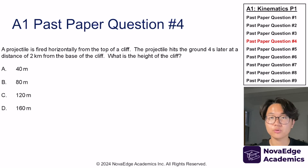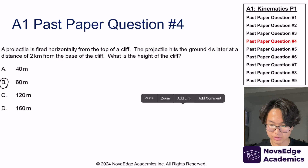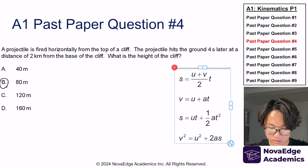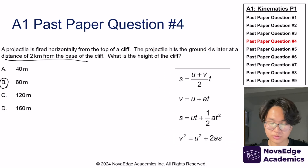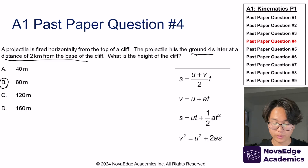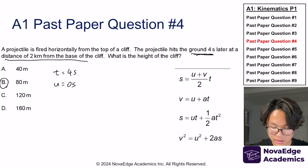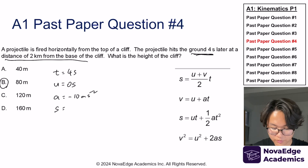Now let's try past paper question 4 for topic A1. If you answered B, you are absolutely correct. We have to use SUVAT. One thing they gave extra is the horizontal distance — we don't care about that, because distance traveled vertically is not represented by the distance traveled horizontally. What matters is the 4 seconds. So t equals 4 seconds, initial velocity is 0 because vertical velocity is 0, and acceleration is negative 10 meters per second squared.